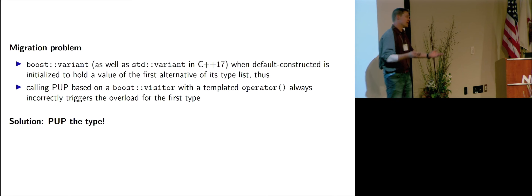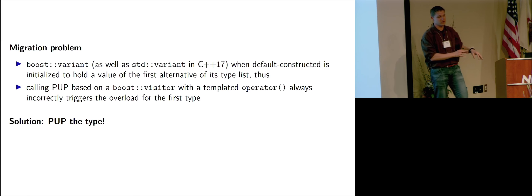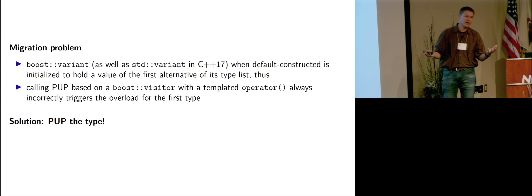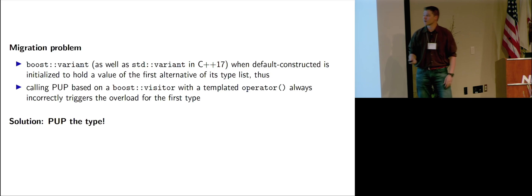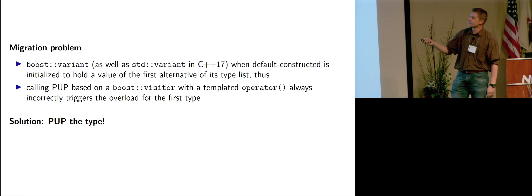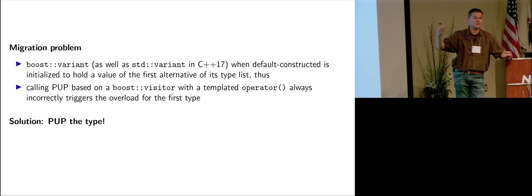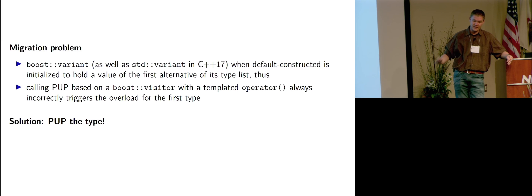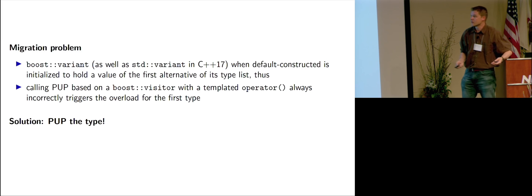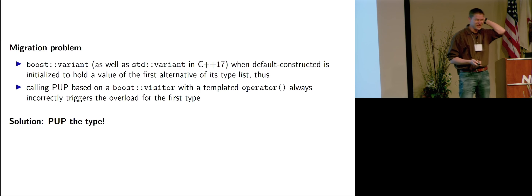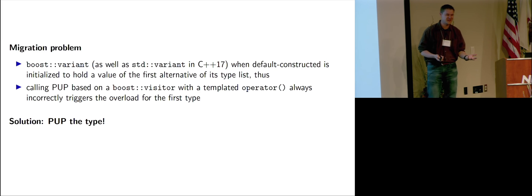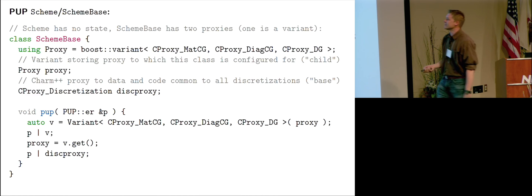When I wrote this, I was happy it works. It's complicated, but as long as it's hidden and documented well so I can remember it a month later, that's fine. But then it doesn't migrate — because of a particular feature of boost::variant and std::variant: when Charm++ migrates, on the receiving side it calls the default constructor, which always defaults to the first type in the variant. I put in the second type but the first type comes out, which is wrong. The solution is you've got to send the type across the network. I didn't know how to do that at first — I can send a value across the network, but a type? So, tuples again.